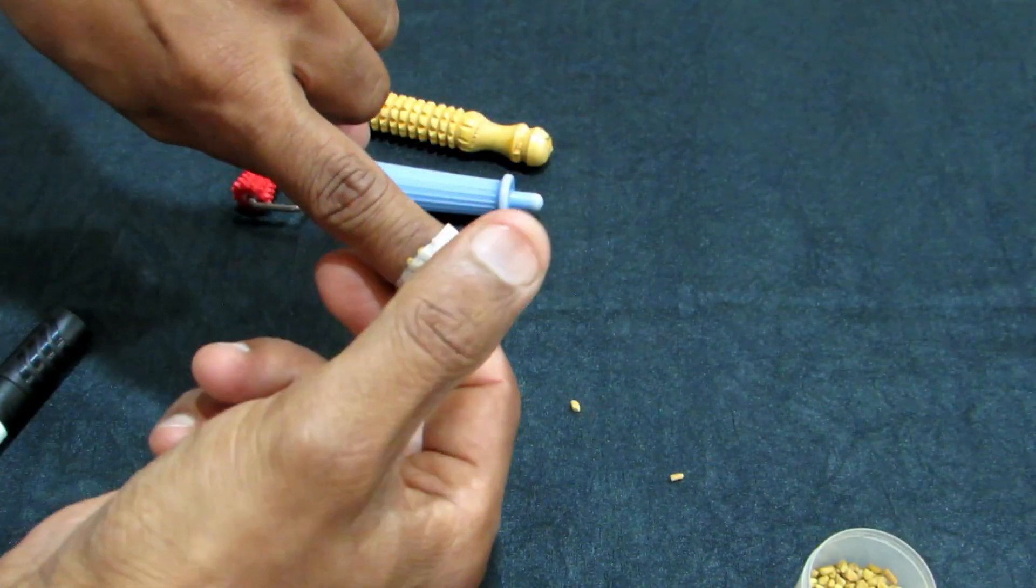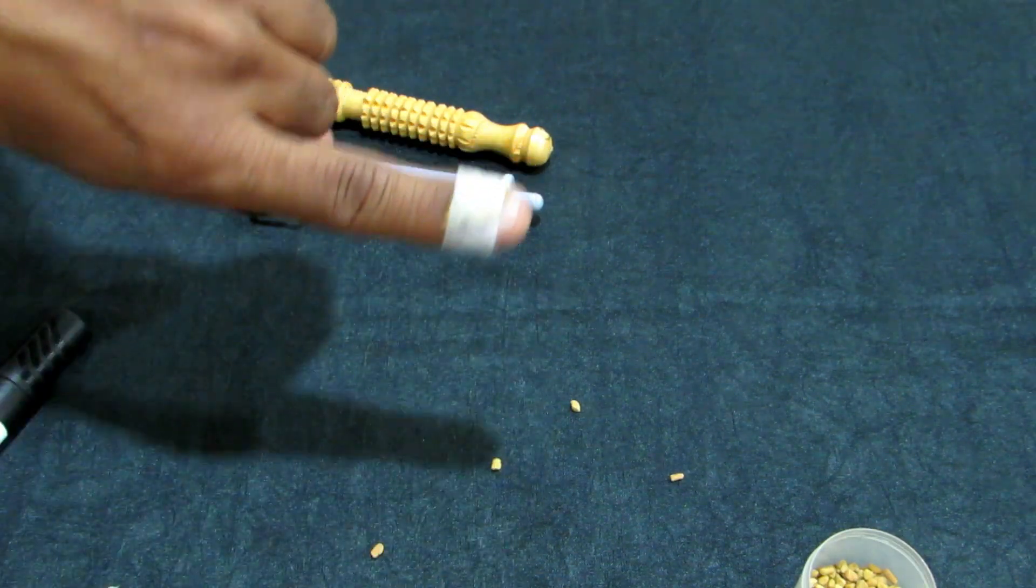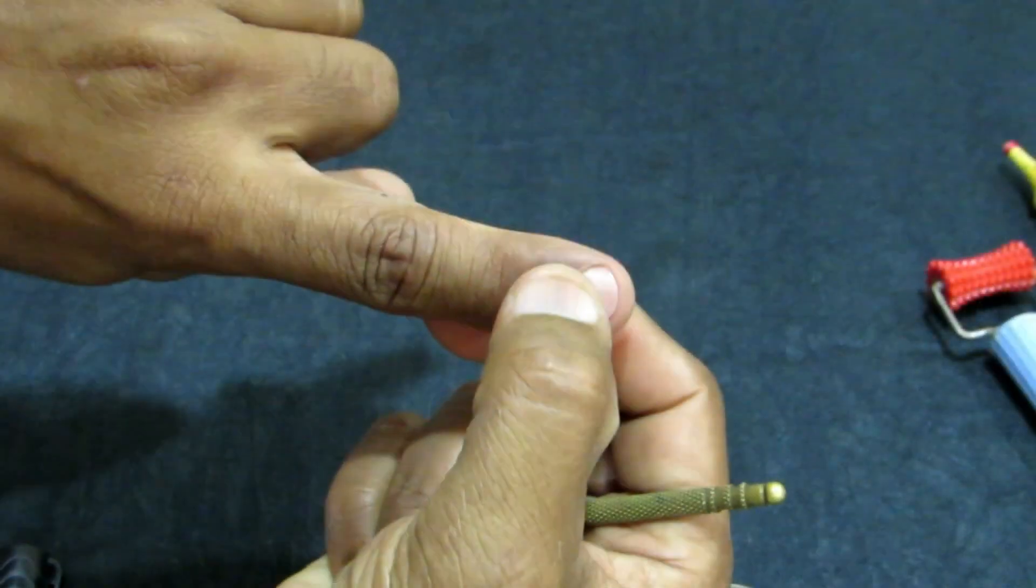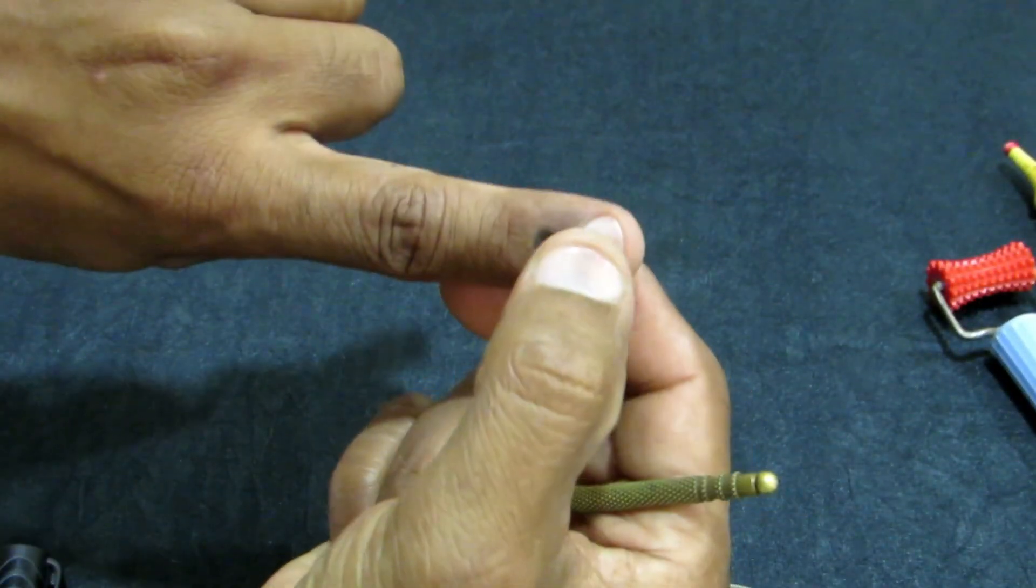Press, rotate, release. Press, rotate, release. This point, Triple Warmer, is a magical point.